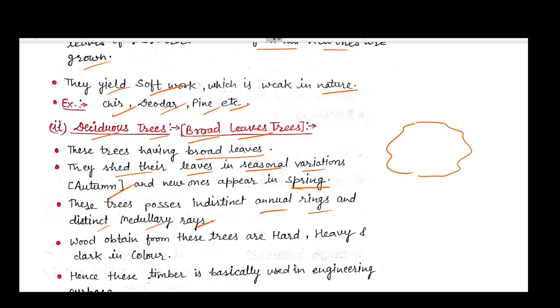This is the log of a tree. This is the core of the tree, these are the annular rings, and medullary rays are like this.